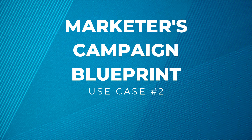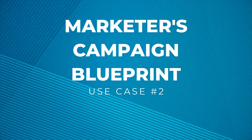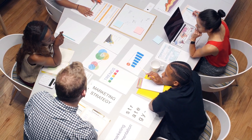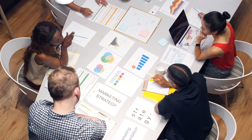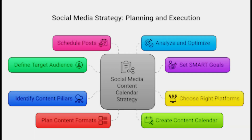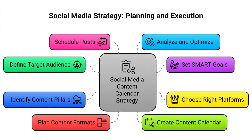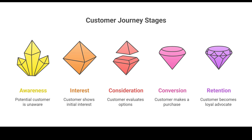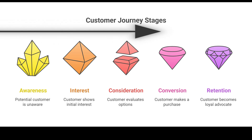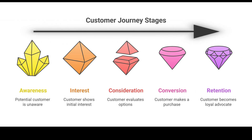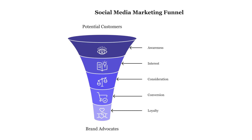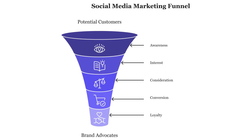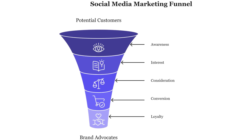Second, the Marketer's Campaign Blueprint. Modern marketing strategies have many moving parts across multiple channels. Napkin AI can be used to create a visual content calendar, map out a complete customer journey from awareness to conversion, or build a marketing funnel diagram that the entire team can align on and understand.